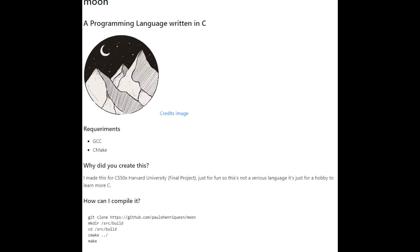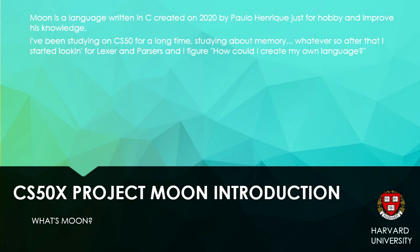So, what is Moon? Moon is a language written in C, created in 2020 by Paulo Henrique — that is me — just for hobby and to improve his knowledge. I made this language just for improving my knowledge and my skills in C.